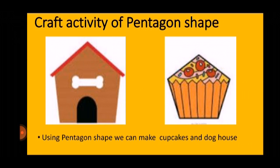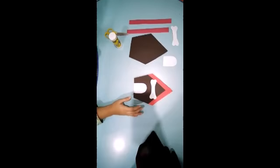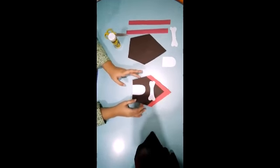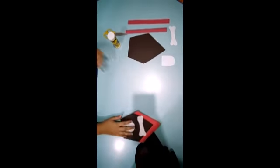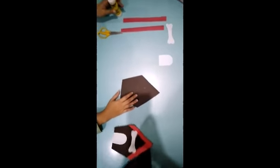...can make cupcakes and dog houses. We will make a dog house using pentagon shape. Let's do the activity. The activity is using pentagon shape we have made a dog house. Let's make a dog house. First of all...